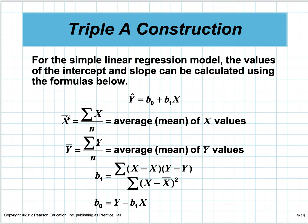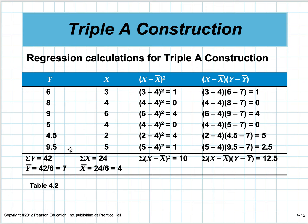b0 is y-bar minus b1 times x-bar. The best-fit line always goes through x-bar and always goes through y-bar—you have to take my word for that. You could do all these calculations, or there's a simpler way of doing it, which I will show you right now.